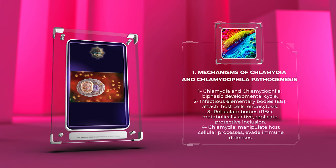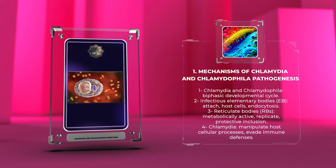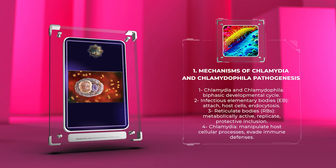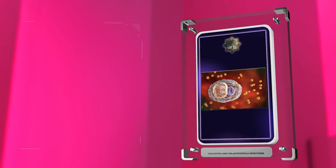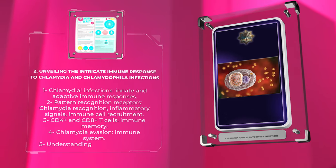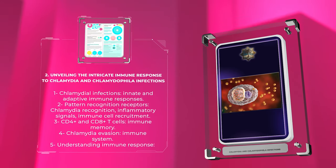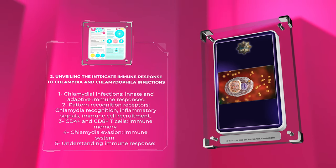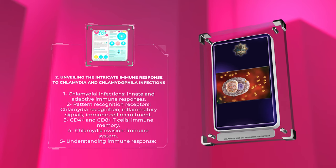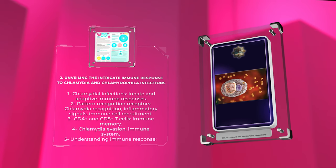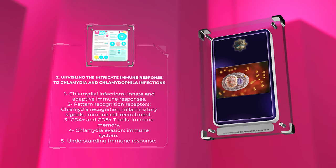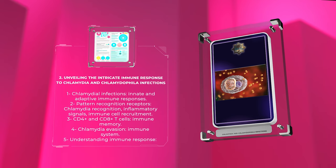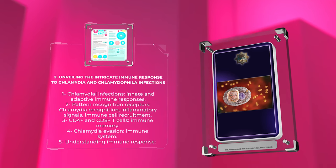Chlamydia uses various strategies to manipulate host cellular processes and evade immune defenses. This knowledge is crucial for developing targeted treatments. Chlamydial infections activate both the innate and adaptive immune responses. Immune cells recognize chlamydia through pattern recognition receptors, leading to the release of inflammatory signals and the recruitment of immune cells. CD4+ and CD8+ T cells generate immune memory for protection. However, chlamydia can evade the immune system through various mechanisms.